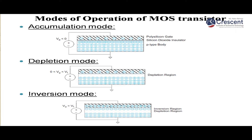In depletion mode, the gate voltage is greater than 0 but less than the threshold voltage. The threshold voltage is the minimum voltage required for conductivity to take place. Due to the positive gate supply, holes in the P-substrate are repelled, creating a space beneath the gate oxide layer called the depletion layer.